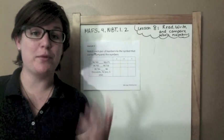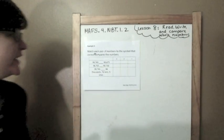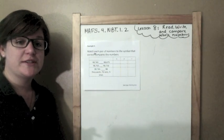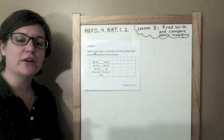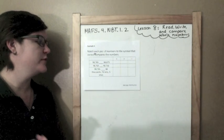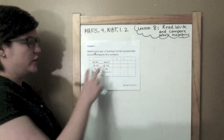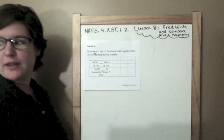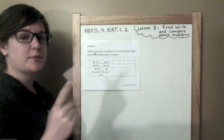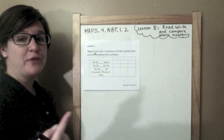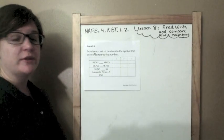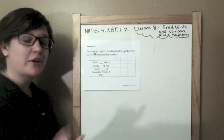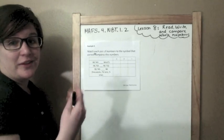Alright, we're on example 5. It says: match each pair of numbers to the symbol that correctly compares the numbers. What I'm going to do is look at each number and decide which symbol belongs between them. First, I'll count the digits to make sure they have the same amount. If they have the same amount, I take it a step further. If they don't, then I have my answer.